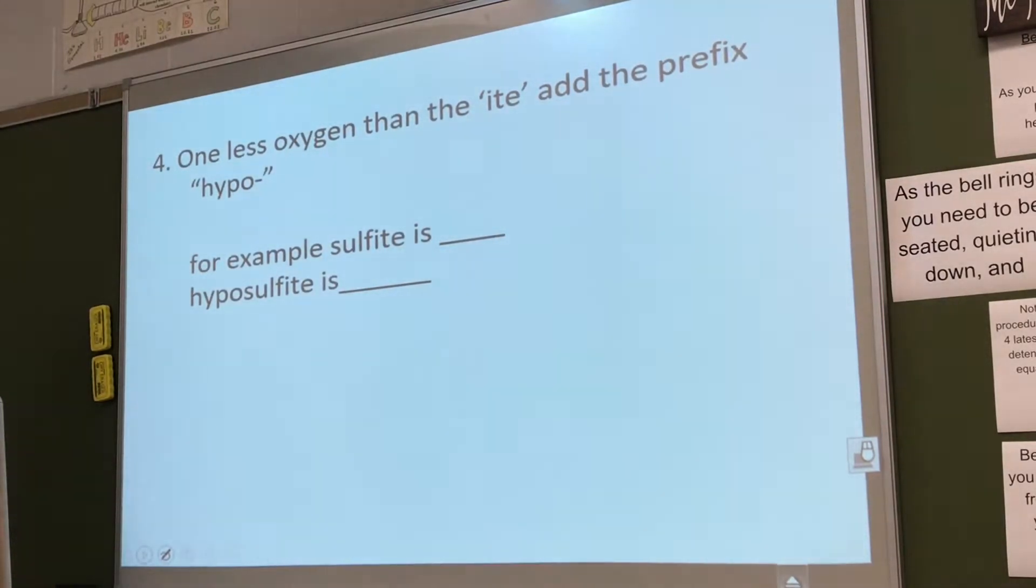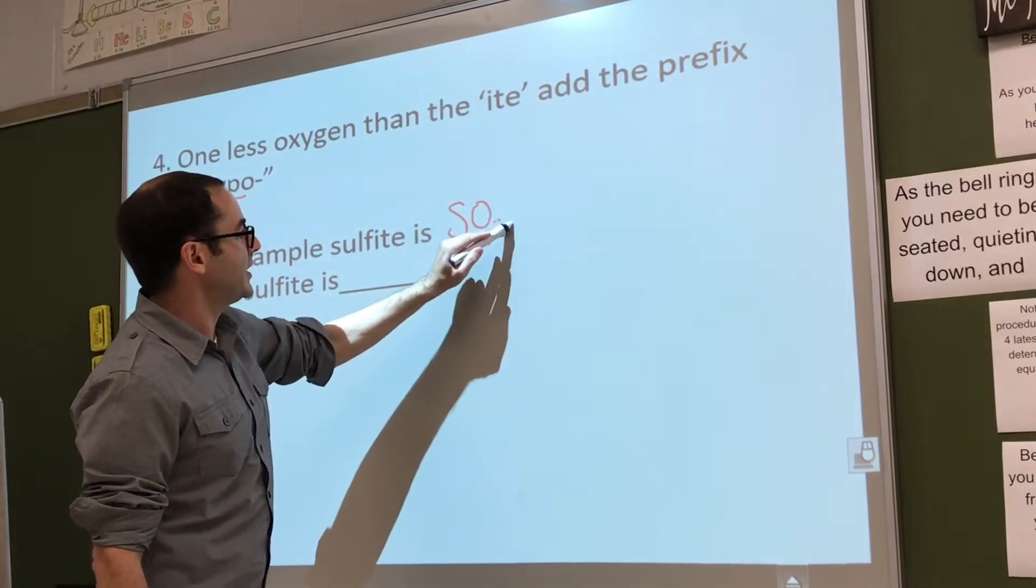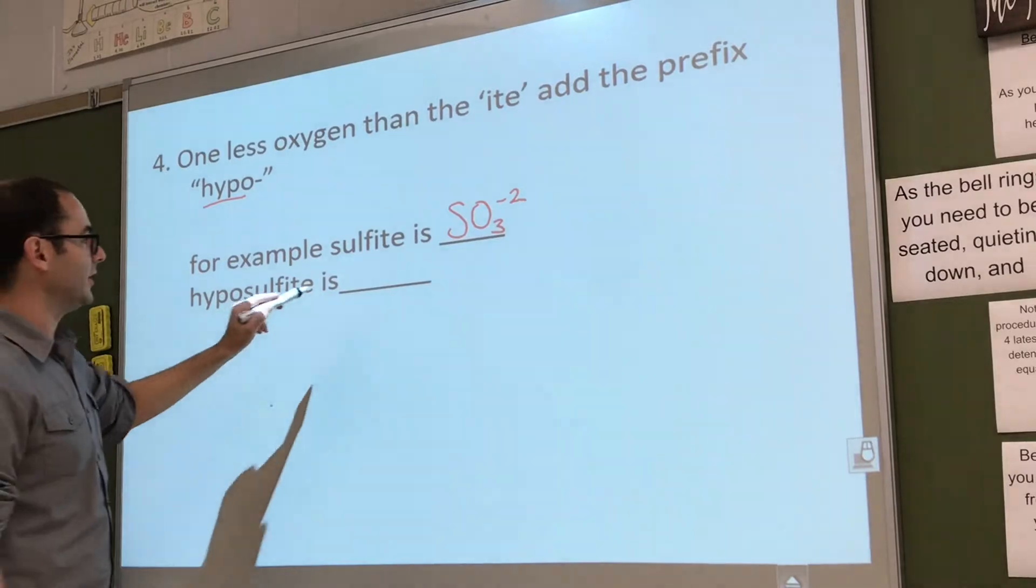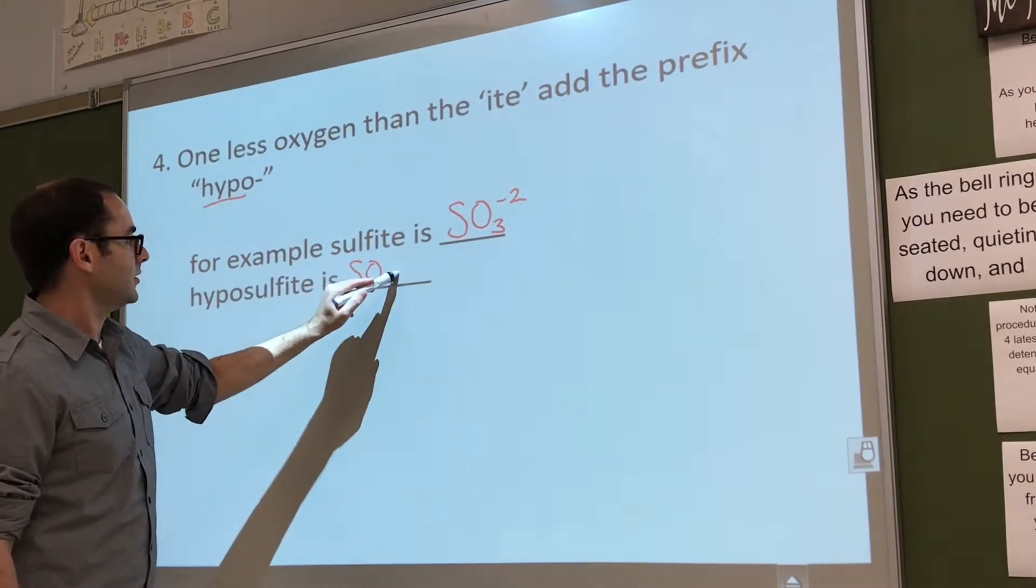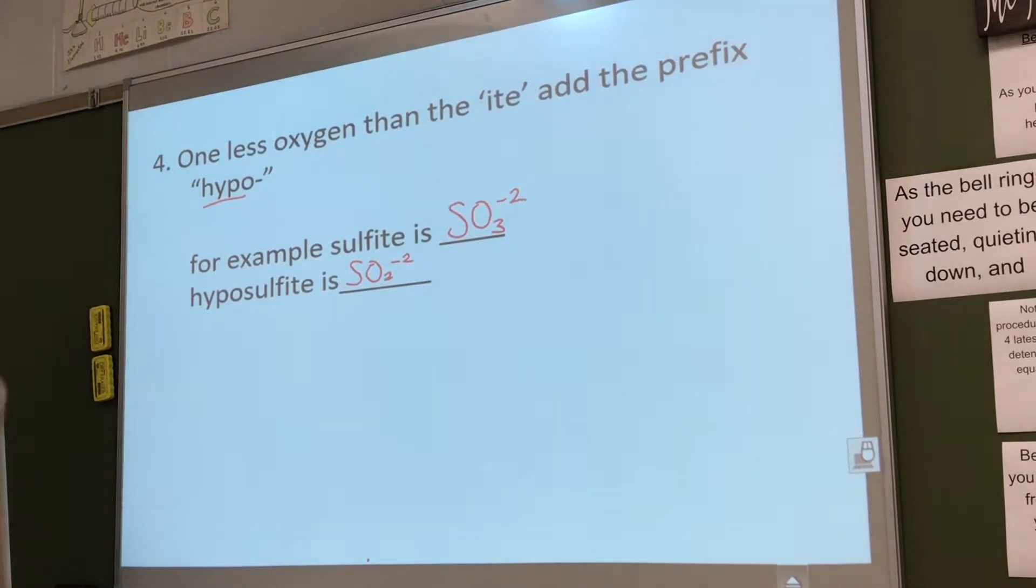Then there's one less oxygen than -ite. You have to add the prefix hypo. For example, sulfite was SO3 minus 2. Hyposulfite is SO2 minus 2. So now we went up another 16.